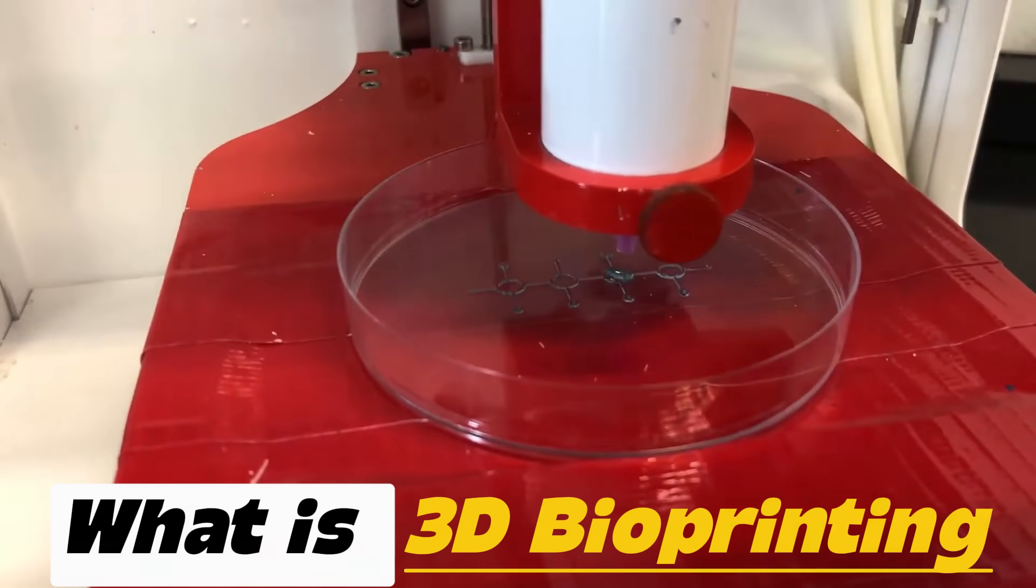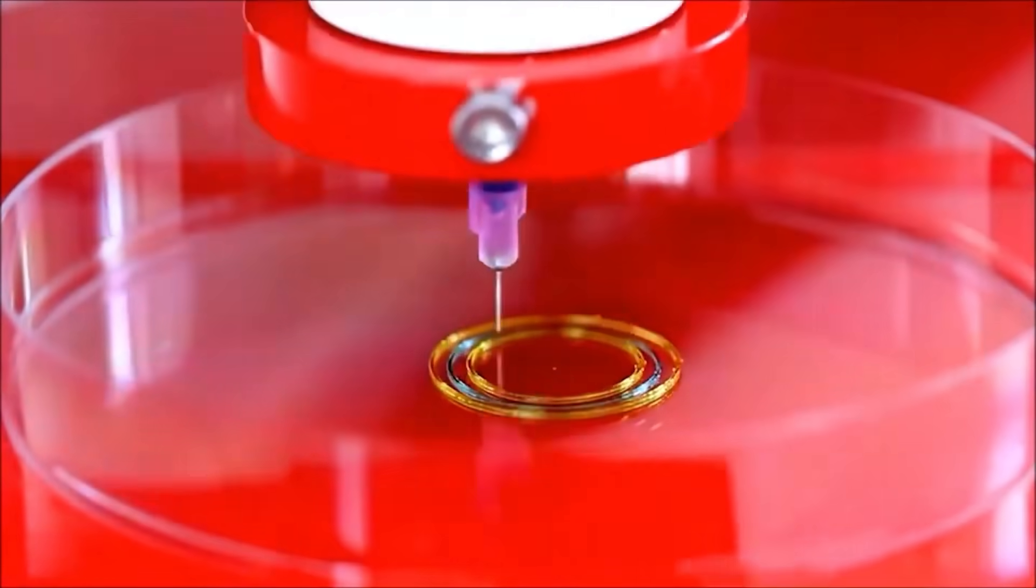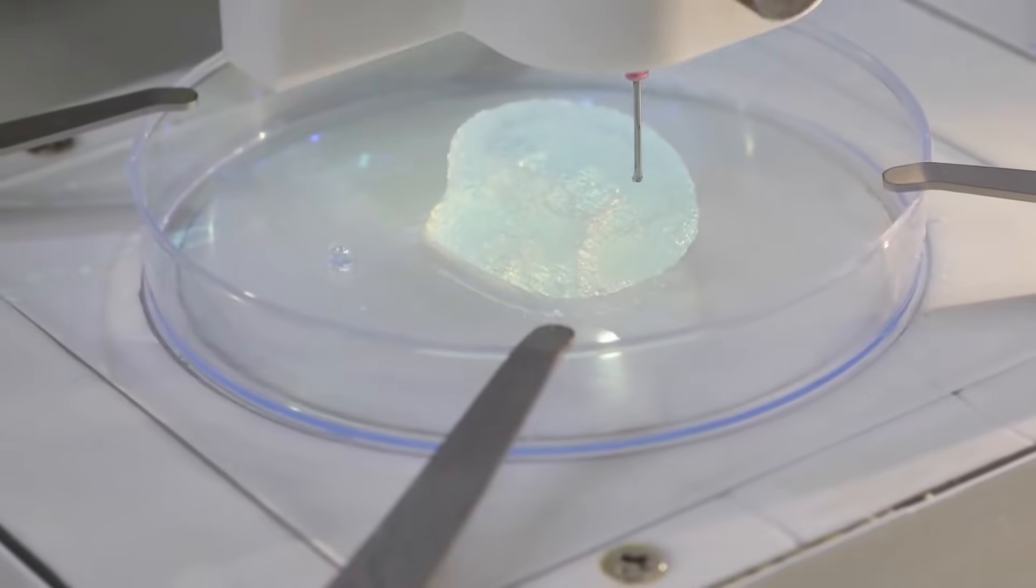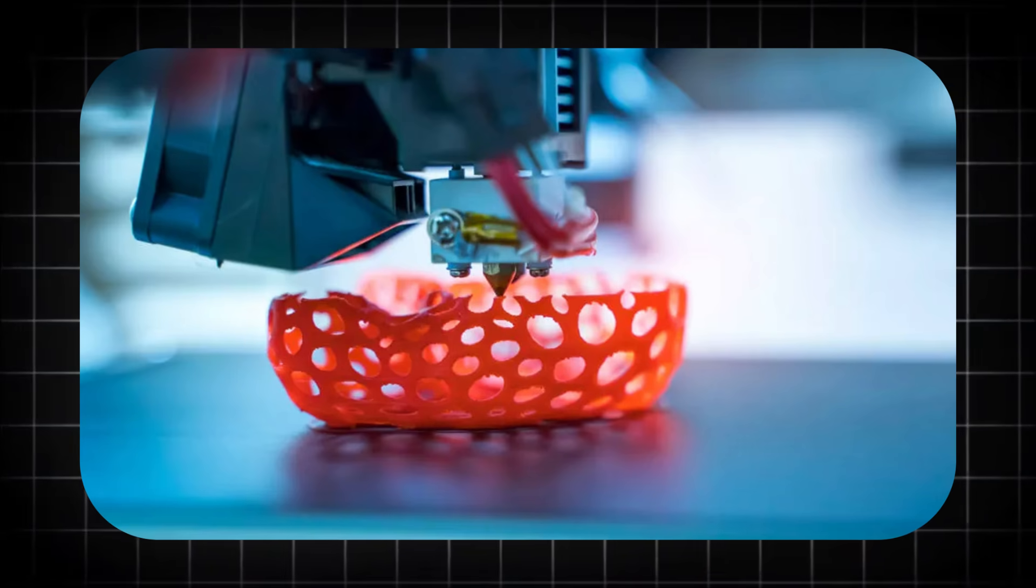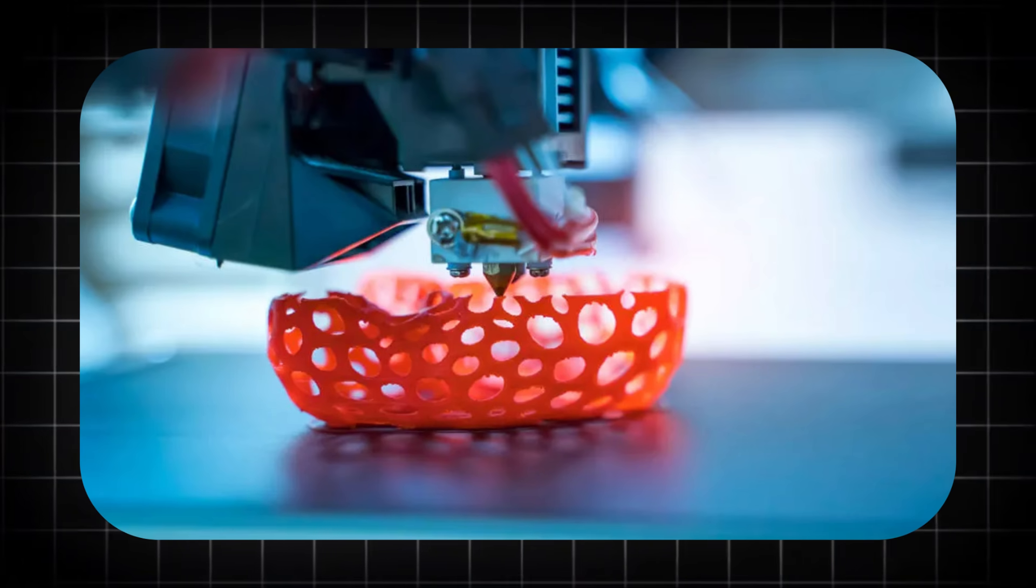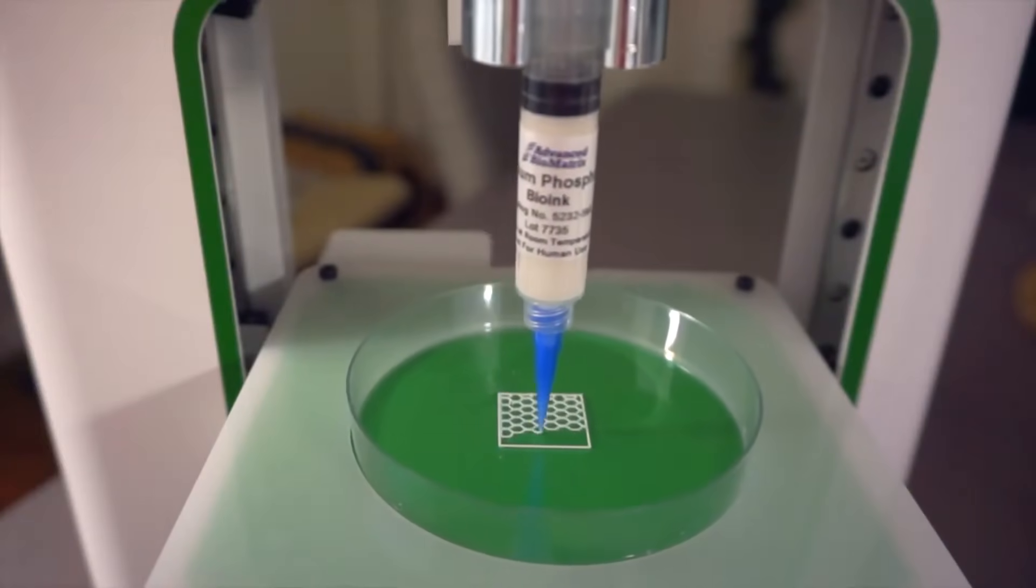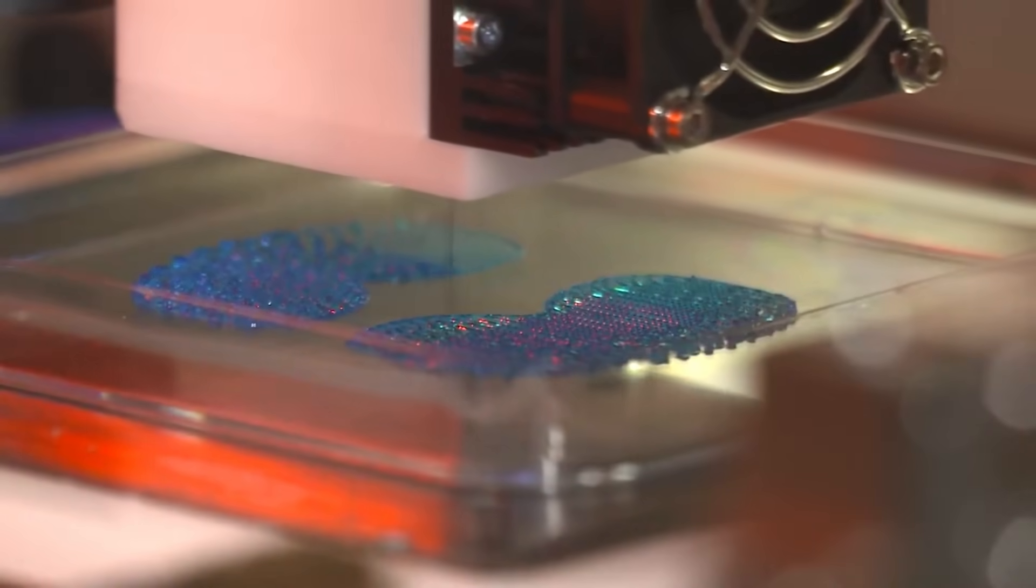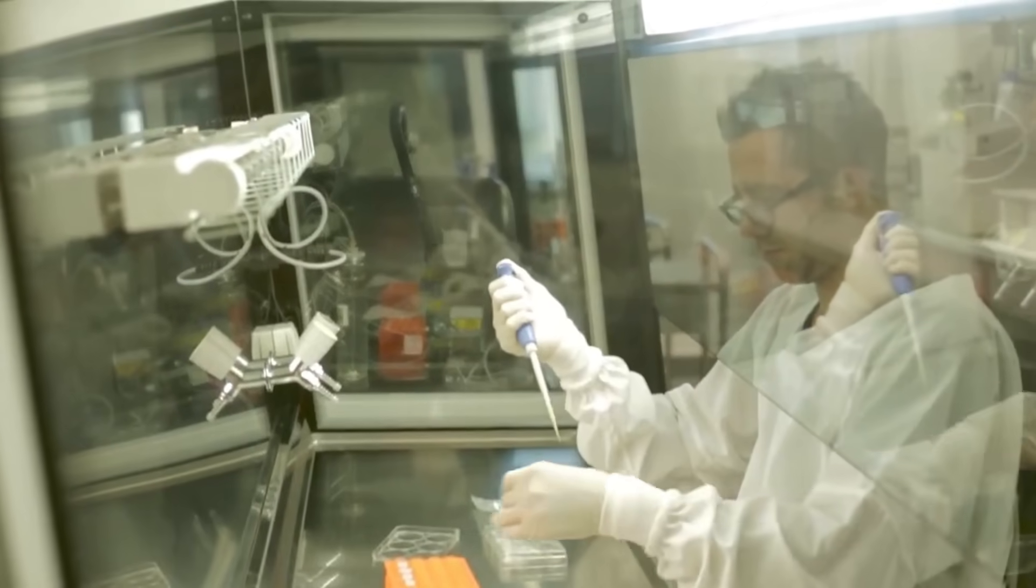Number 5. What is 3D bioprinting? 3D bioprinting refers to an innovative technology that uses specialized 3D printers to create living tissues and organs by depositing layers of bioinks containing living cells. Unlike traditional 3D printing, which works with plastics or metals, bioprinting uses biological materials to replicate the structure and function of human tissues. This process begins with imaging techniques such as MRI or CT scans to create accurate digital models of the tissue or organ that needs to be printed.